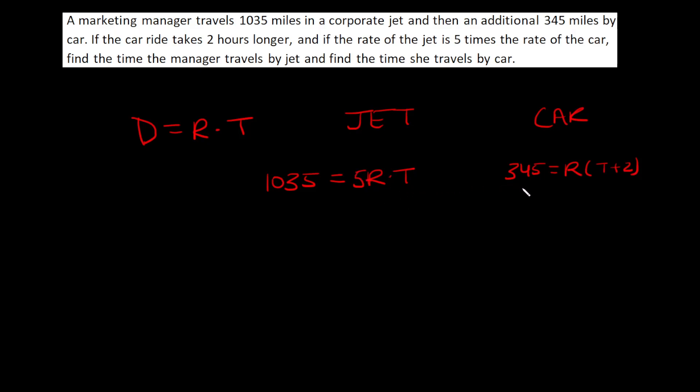We need to solve for T here. I'm going to write these out - we have the jet and then the car, and I'm going to divide these. So we have 1035 divided by 345, which gives us 3. The R's cancel, so we have 5T over T plus 2.